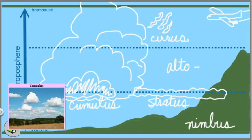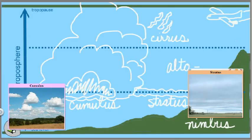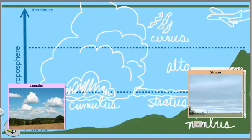Stratus clouds are those that are a blanket of clouds, spread out, a little sunshine, down here at a low level, so mostly water droplets.